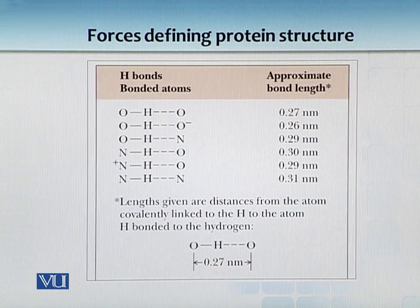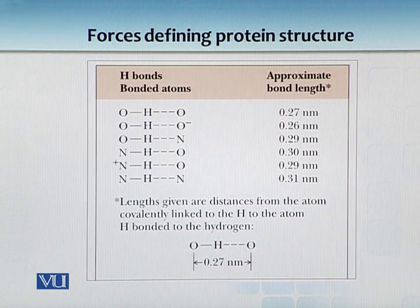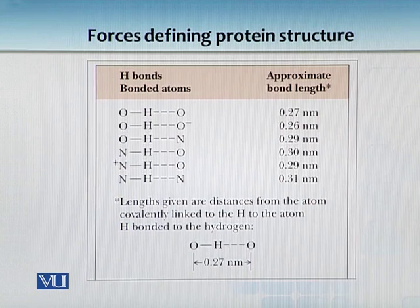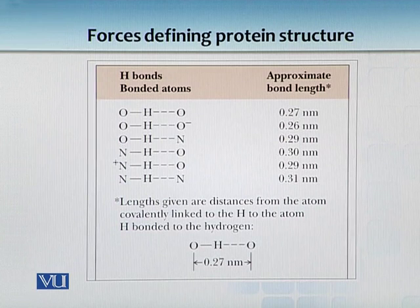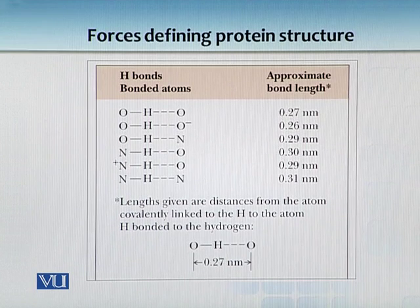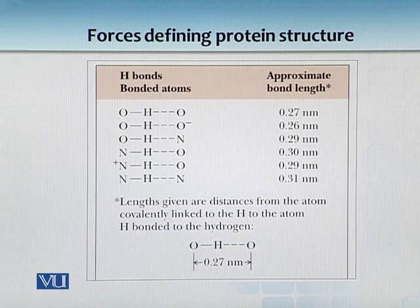When you are modeling these proteins, there is one thing you have to be very careful about: your hydrogen bond distance will differ depending on the electronegative element. Even if the difference is minute, when you are doing protein modeling in bioinformatics, this plays a key role. If it's oxygen, the distance is 0.27 nanometers; if it's nitrogen, it's 0.29 nanometers. And if the nitrogen is not charged, or if a hydrogen is attached to the nitrogen and it is then interacting with oxygen, it can go up to 0.30 or 0.31 nanometers. So that is something you have to be very careful about when modeling your proteins.